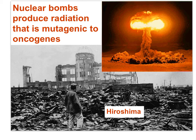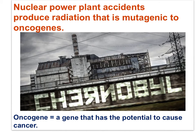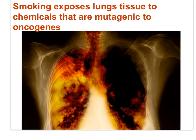The radiation from nuclear bombs is mutagenic to oncogenes. An oncogene is a gene that has the potential to cause cancer, as it is a gene involved in the regulation of cell division. Nuclear power plant accidents also produce radiation that is mutagenic to oncogenes. Smoking exposes lung tissue to chemicals that are mutagenic to oncogenes.